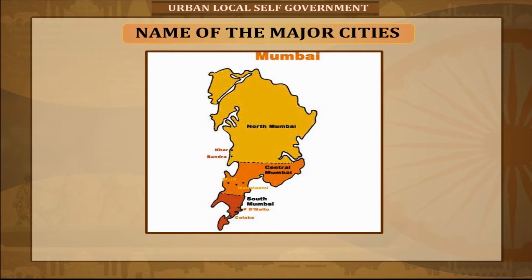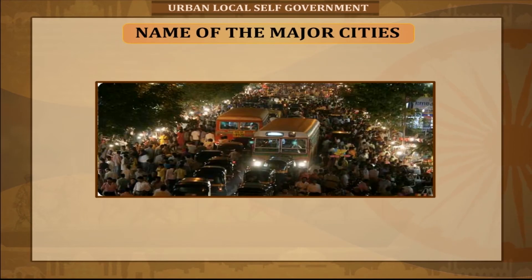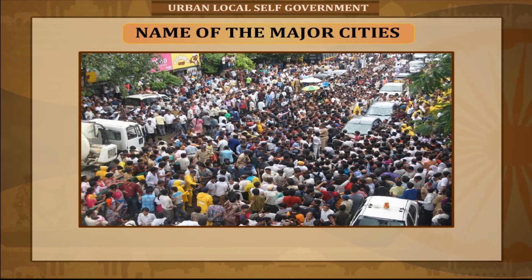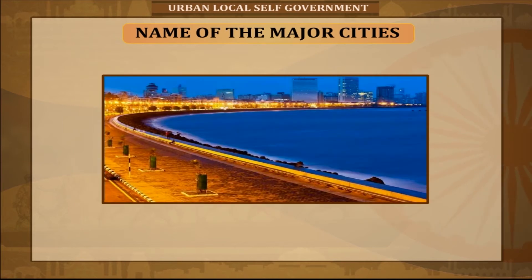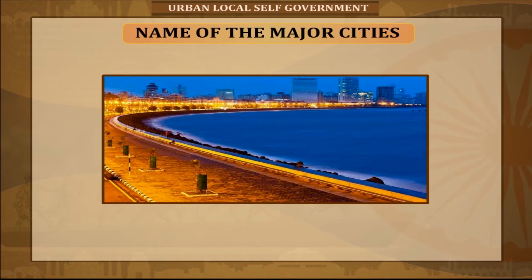Mumbai, also known as Bombay (the official name until 1995), is the capital city of the Indian state of Maharashtra. It is the most populous city in India and the ninth most populous agglomeration in the world, with an estimated city population of 18.4 million. Along with the neighboring regions of the Mumbai Metropolitan Region, it is one of the most populous urban regions in the world and the second most popular metropolitan in India, with a population of 20.7 million as of 2011.